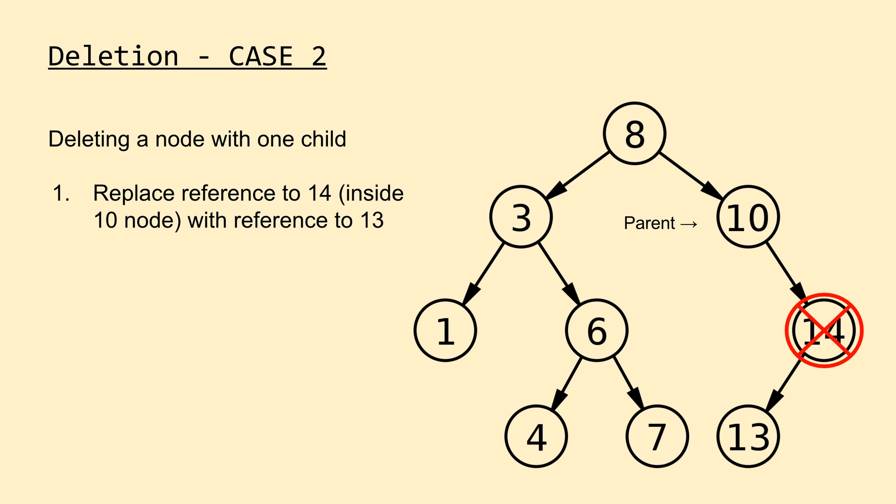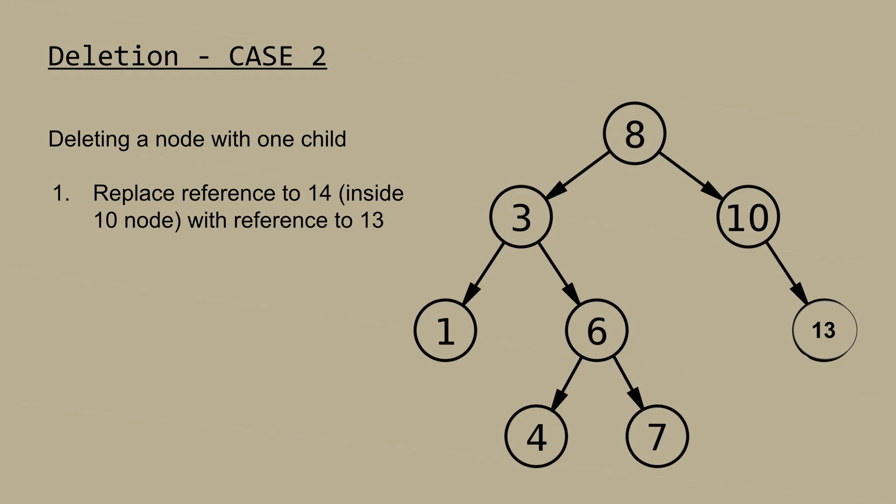The second possible case is when you try to delete a node with a single child. This case is a bit more involved, but still fairly simple to implement. To delete the 14 node, as we can see on the slide, we would go up to its parent, the 10 node, and swap out its reference to the 14 node with the child of the 14 node, in this case the 13 node. This operation is very similar to the way you delete a node from a linked list. On this slide, we can see how the tree would look after deleting the 14 node.